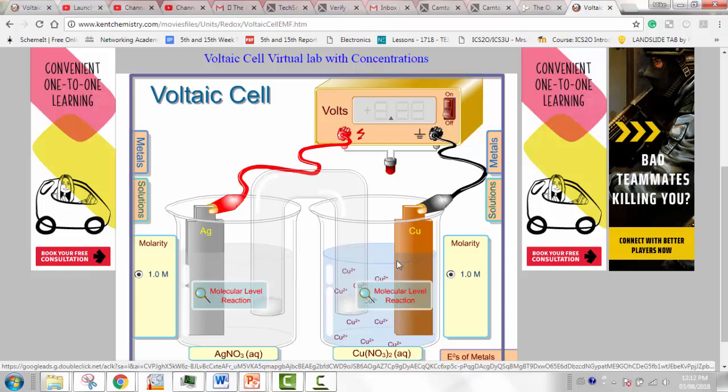Now the electrons come from somewhere. They come from the copper electrode. So the electrons are being pulled off of copper atoms here and the copper is going into solution as copper two plus.